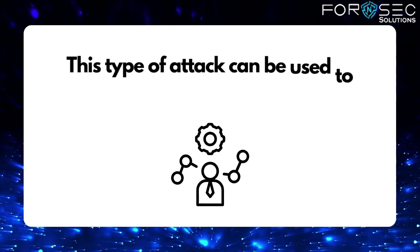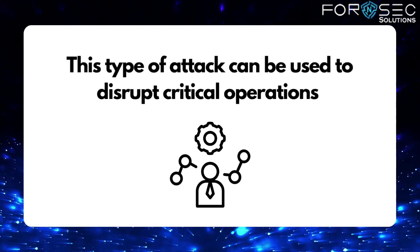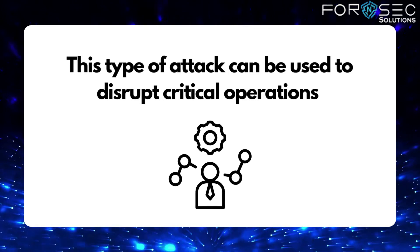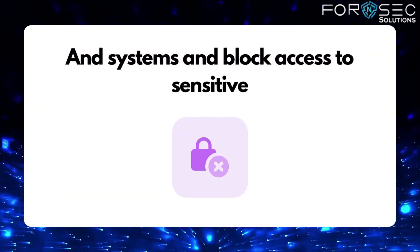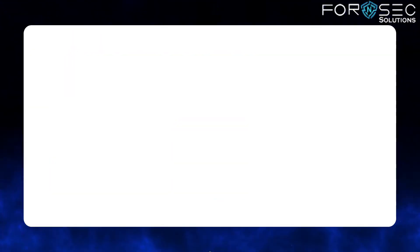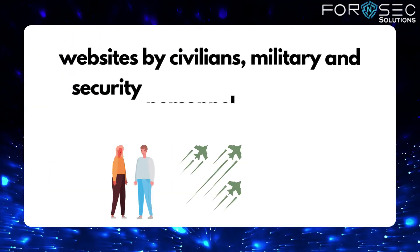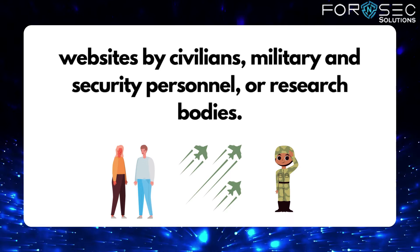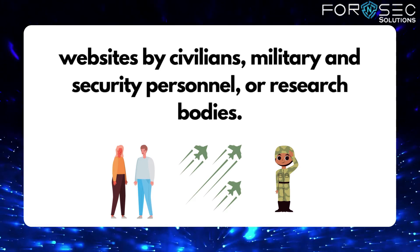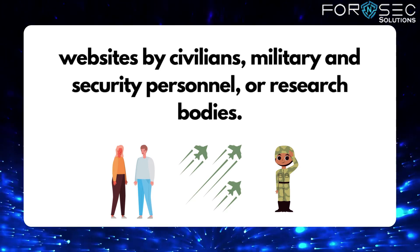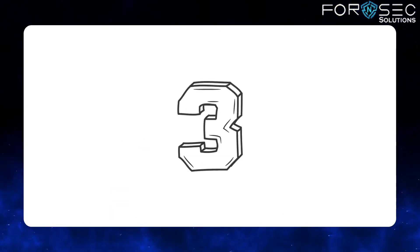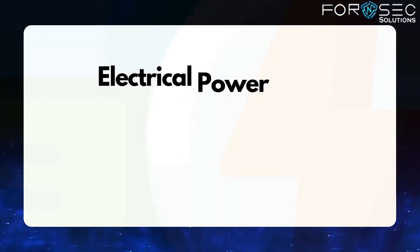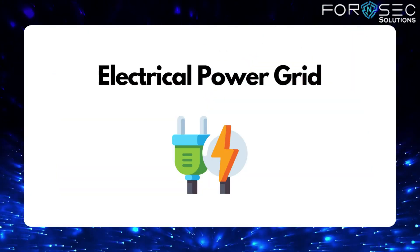This type of attack can be used to disrupt critical operations and systems and block access to sensitive websites by civilians, military and security personnel, or research bodies. Third is Electrical Power Grid.